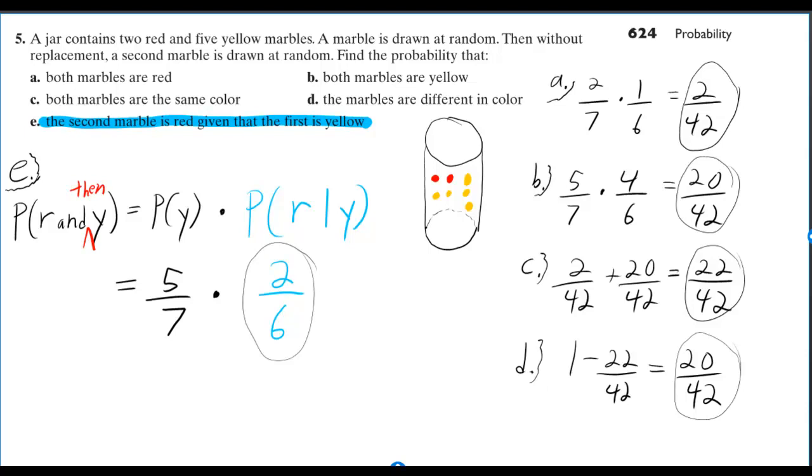A jar contains two red and five yellow marbles. A marble is drawn at random. Then without replacement, a second marble is drawn at random. Find the probability that both marbles are red.